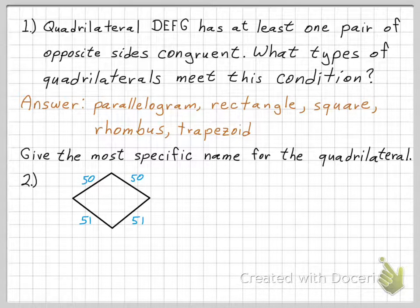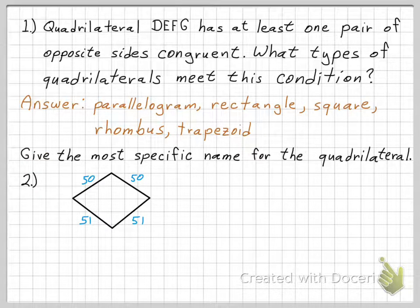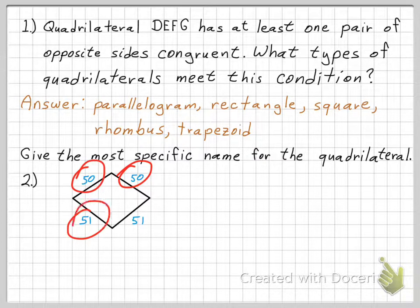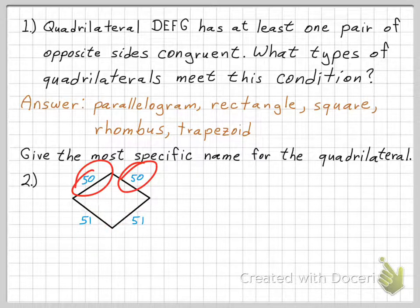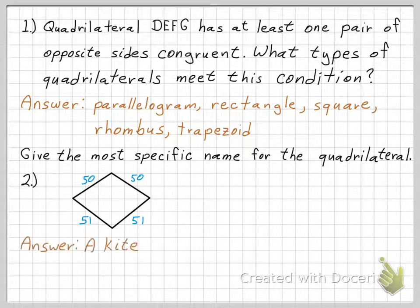Moving on to problem two: give the most specific name for the quadrilateral. You can pause and tackle this on your own by referring to the chart. What you need to notice is that there are two pairs of consecutive congruent sides — 50 equals 50 and 51 equals 51 — but those two congruent pairs are not congruent to each other; one pair is longer than the other. That is the definition of a kite.